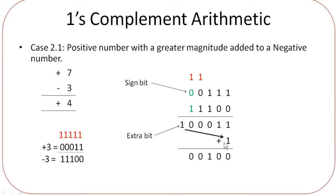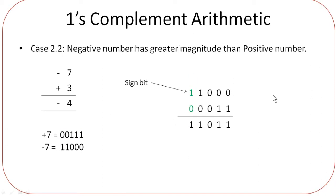If the extra bit is 0, it makes no difference. Since it is 1, take it down, remove it from the MSB position, and add it to the LSB. So 1 plus 1 becomes 10 — carry over 1; then 1 plus 1 is 10 again — put 0, carry 1; put 1, then fill in the remaining digits. You get 00100, which is the binary equivalent of 4. That is the result for Case 2 first part.